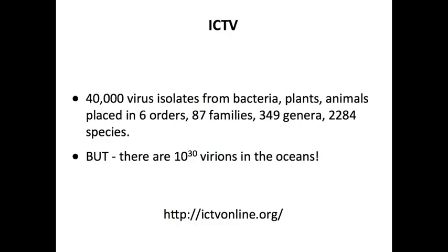There is an organization called the International Congress on the Taxonomy of Viruses. These are people who meet yearly and decide how viruses should be classified. So far, they have classified 40,000 different viruses from all sorts of living things into six orders, families, genera, and species. But this is a drop in the bucket — remember, there are 10 to the 30 bacteriophages in the ocean, and the ICTV has only made a dent. As we sequence with ease — very fast and massive genome sequencing — we discover more and more viruses, making it even harder to classify all of them.